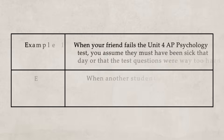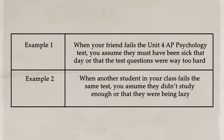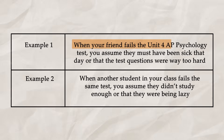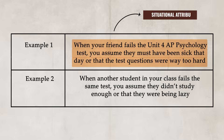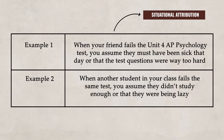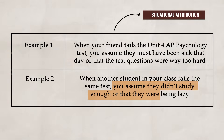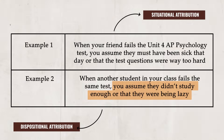Before we delve deeper into these concepts, take a minute and see if you can identify which attributions are being used in these examples. Pause the video if you need more time. Notice that in the first example, when your friend fails the test, you say they might have been sick or the questions were just too hard. These are situational attributions — you are putting the blame on the poor grade on external factors. But in the second example, you are putting the blame on the individual, stating that they must have been lazy and not studied enough.